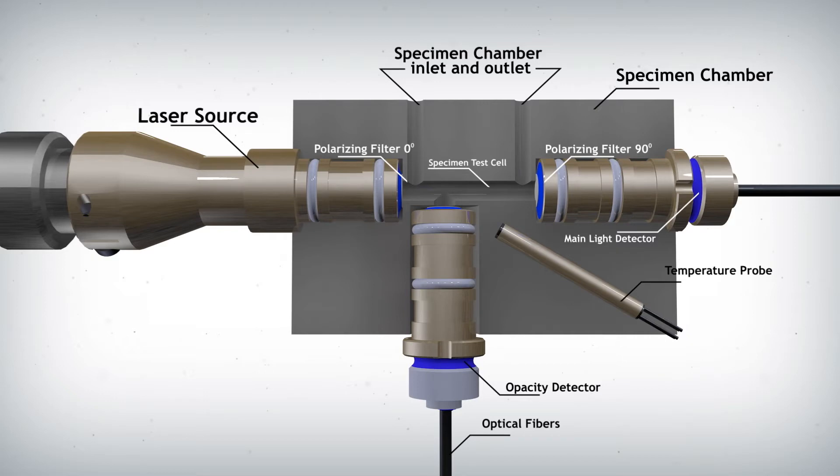Because the polarization filter located on the laser source is 90 degrees out of phase with the polarization filter on the main detector, no light can penetrate the second filter and reach the main detector when the specimen test cell is empty or when there are no crystals in the jet fuel sample.